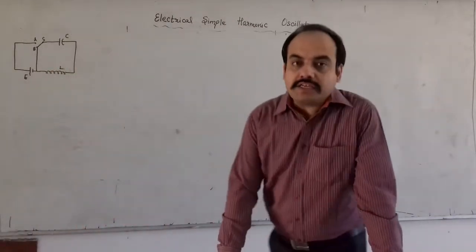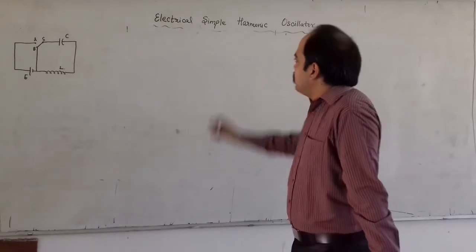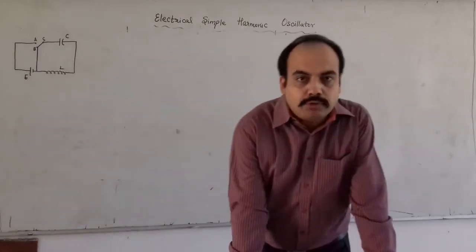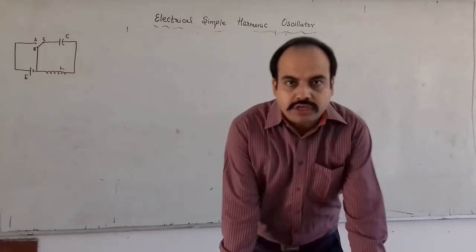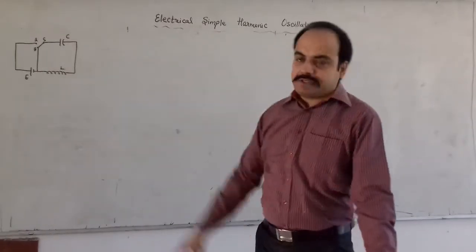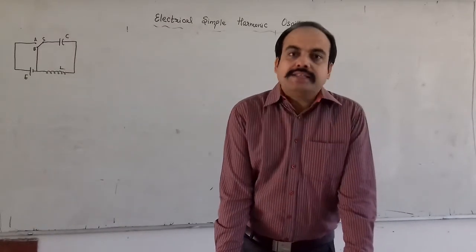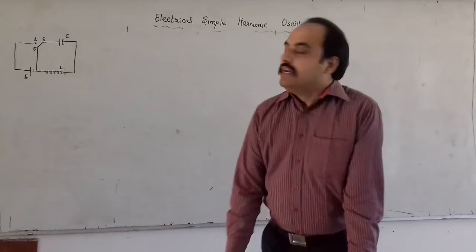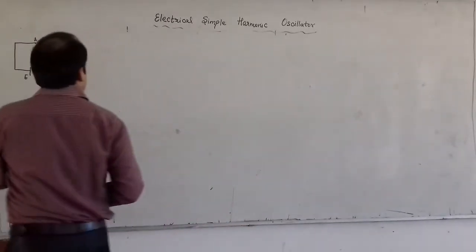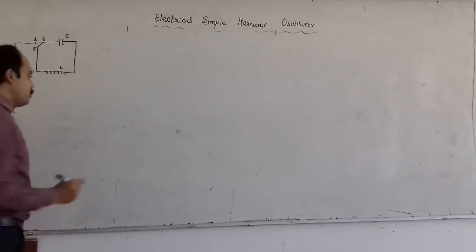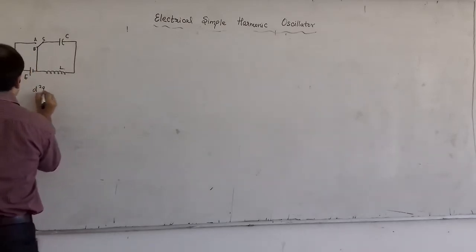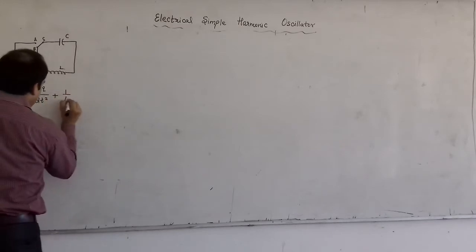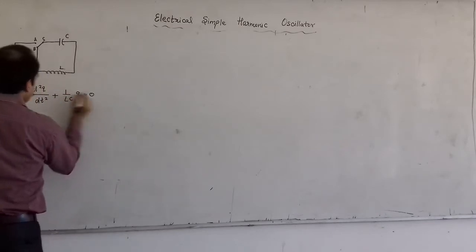Good morning students. In the last lecture we were discussing about the electrical simple harmonic oscillator. We considered an electrical simple harmonic oscillator consisting of a capacitor of capacitance C and an inductor of inductance L. We wrote the equation of motion as d²q/dt² + (1/LC)q = 0.